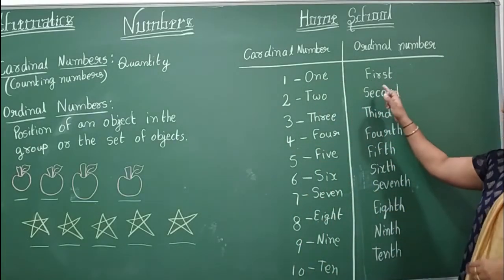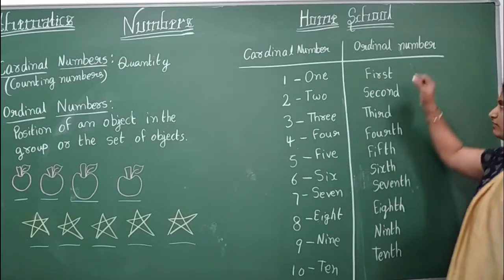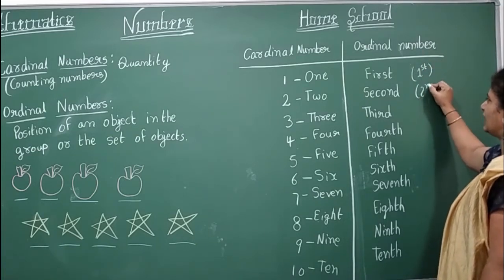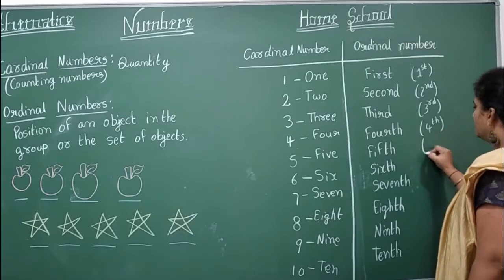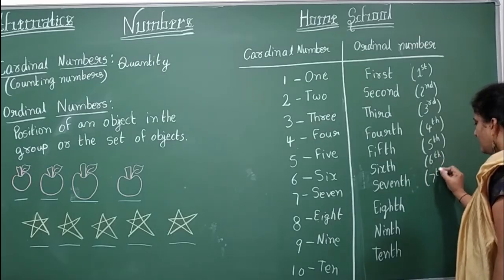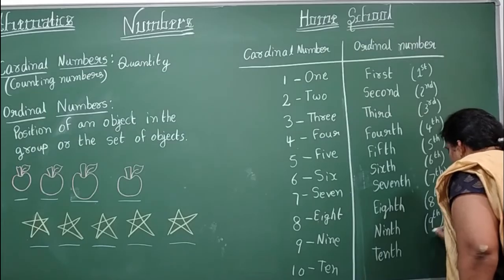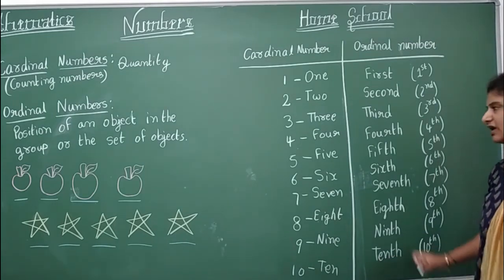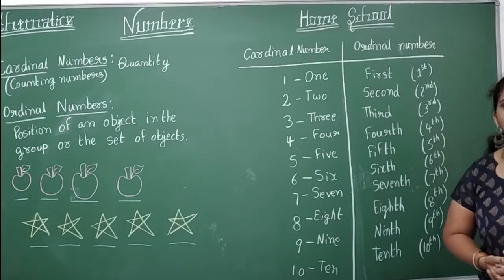Coming to ordinal numbers — how do you write them? 1st, 2nd, 3rd, 4th, 5th, 6th, 7th, 8th, 9th, 10th. You can rewrite them as 1st, 2nd, 3rd, 4th, 5th, 6th, 7th, 8th, 9th, 10th. Saying a position — whether it is the 10th position, 11th position, or 20th position — we call those numbers ordinal numbers.